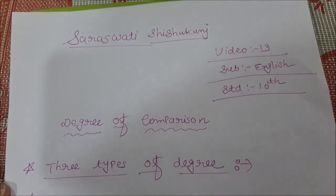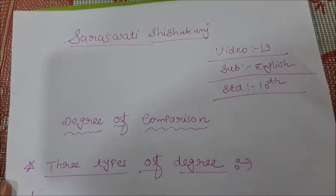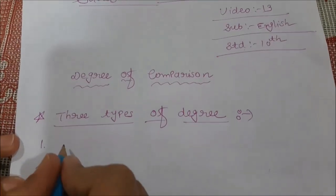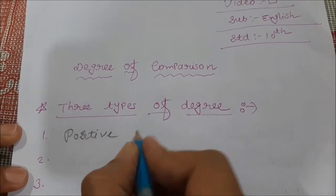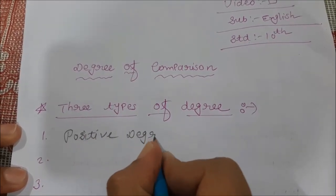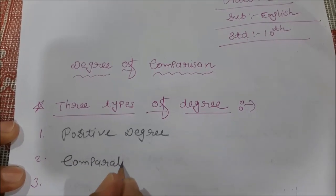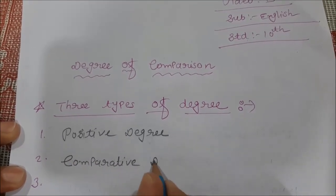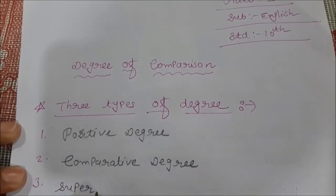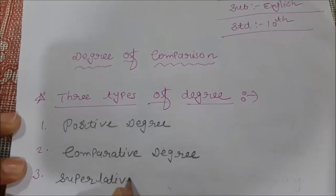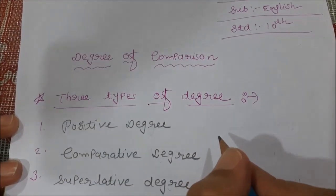There are three types of degree. Let's understand. First one: positive degree. Second one: comparative degree. Third one: superlative degree. Now let me discuss one by one.